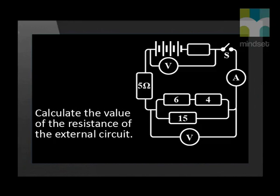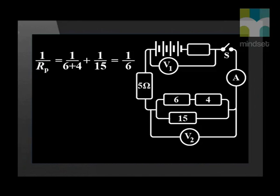Now let's calculate the value of the resistance of the external circuit. First, we find the resistance Rp of the parallel combination. We substitute into our formula and remember to invert our answer and we find the total resistance of the parallel combination is 6 Ohms.